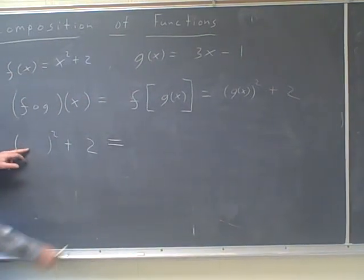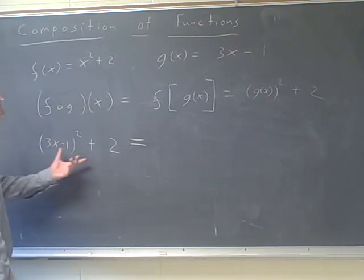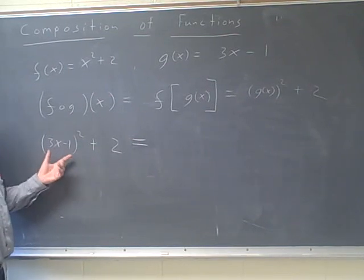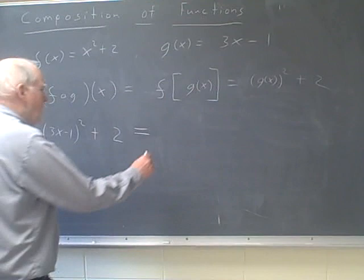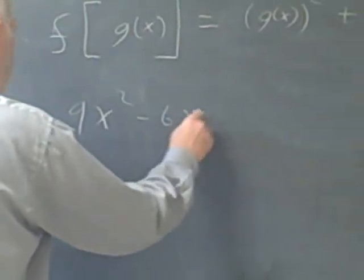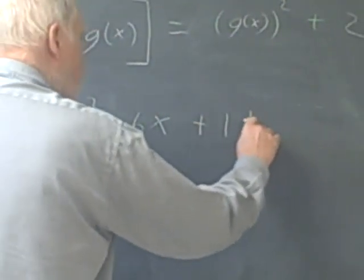Well, what is g(x)? g(x) is 3x minus 1, right? And there, technically, I found f of g of x, except we don't usually like to look at it this way. We could probably square this and combine like terms. So I'm going to square that and get 9x squared minus 6x plus 1, plus 2.